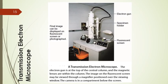Here is an image of the transmission electron microscope. It shows the fluorescent screen, the specimen holder, and the electron gun that produces the electron beam. The final image can be displayed on the fluorescent screen or a photograph. The electron gun is at the top of the central column, and the magnetic lenses are within the column. The image on the fluorescent screen is viewed through a magnifier positioned over a viewing window, and the camera is in a compartment below the screen.